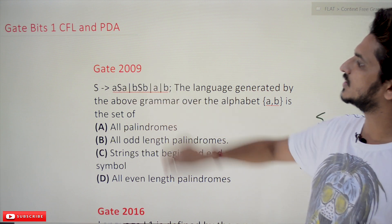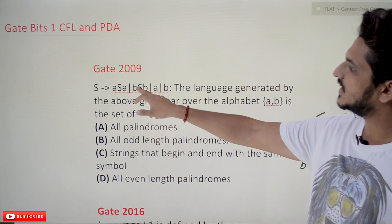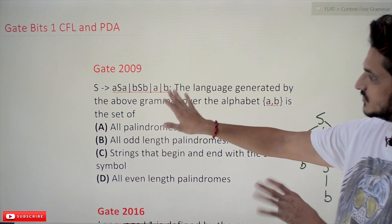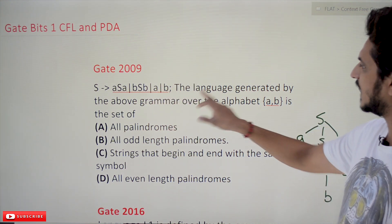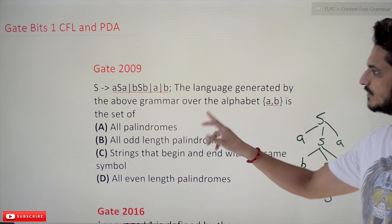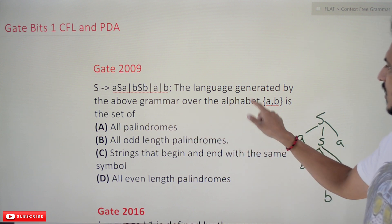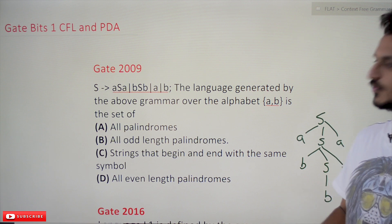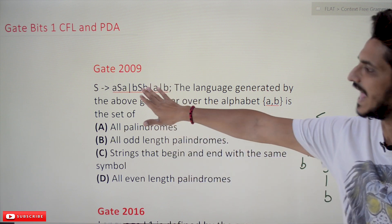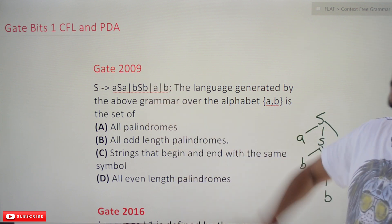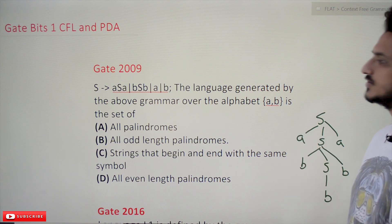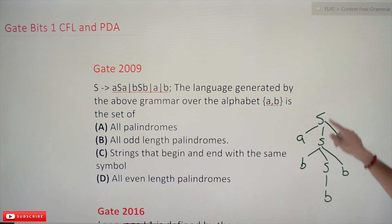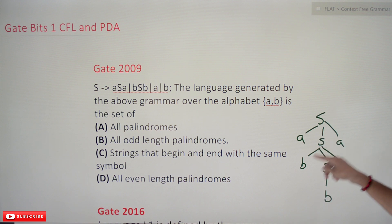This is the bit given in Gate 2009: S tends to aSa | bSb | a | b. This is the context-free grammar given. The question is: what is the language generated by the above grammar over the alphabet {a, b}? We already discussed about this grammar — S→aSa, S→bSb.